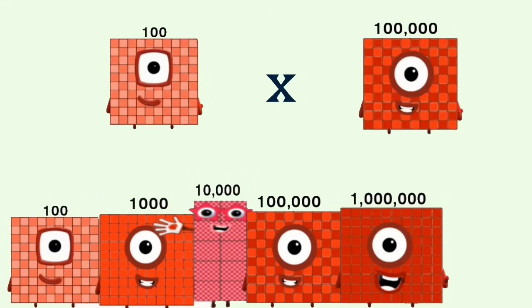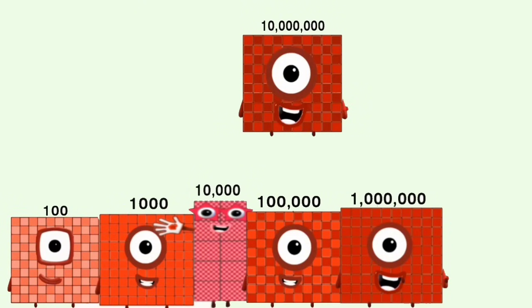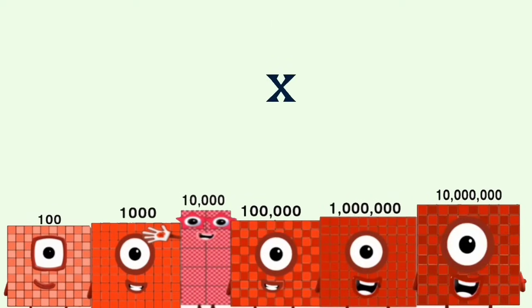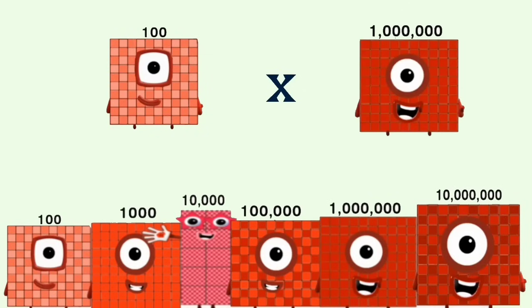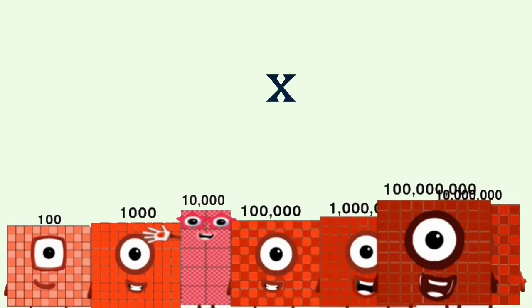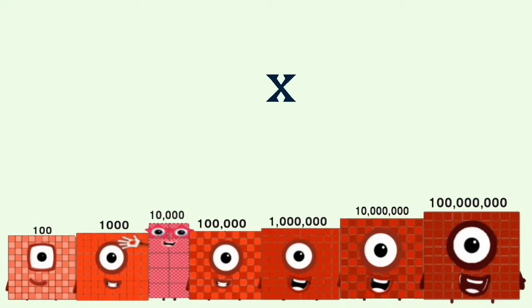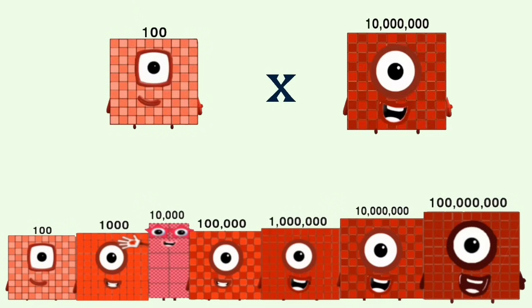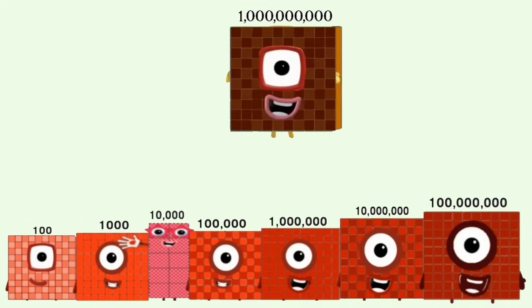100 times 100,000 equals 10,000,000. 100 times 1,000,000 equals 100,000,000. 100 times 10,000,000 equals 1,000,000,000.